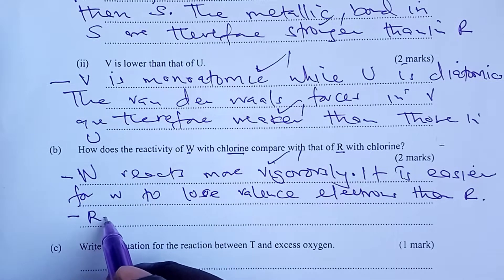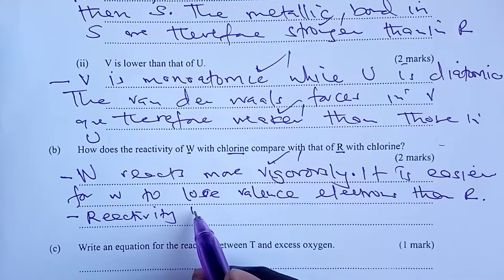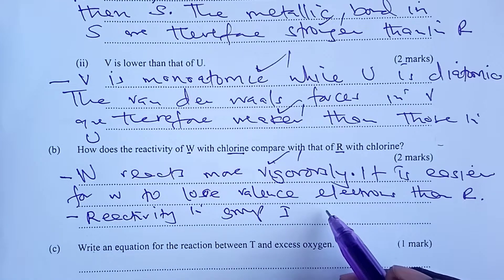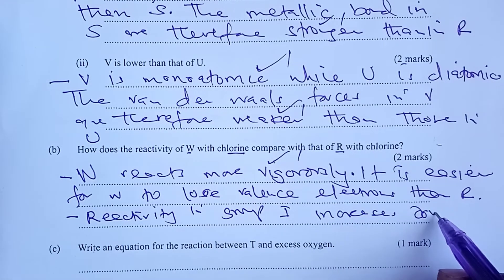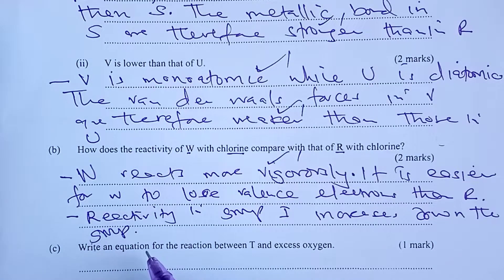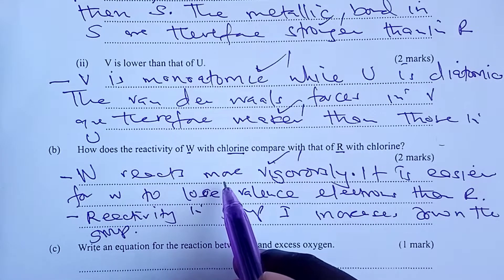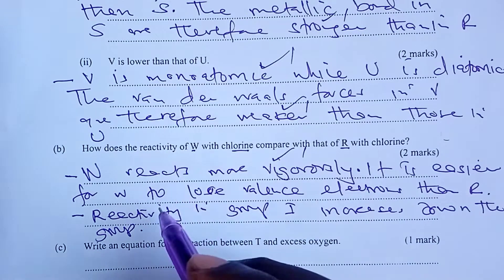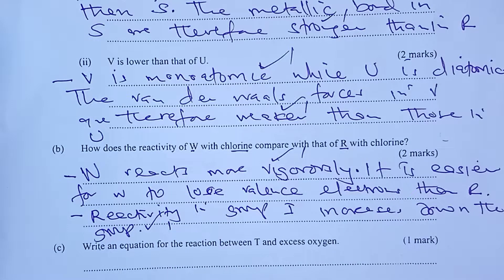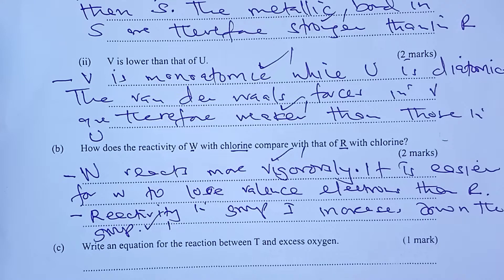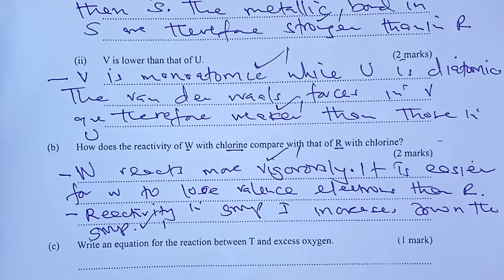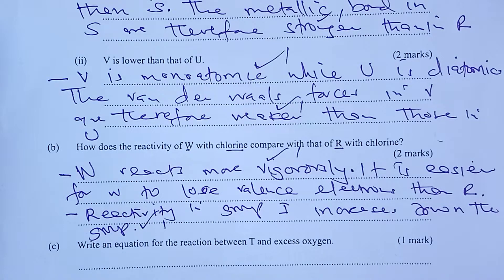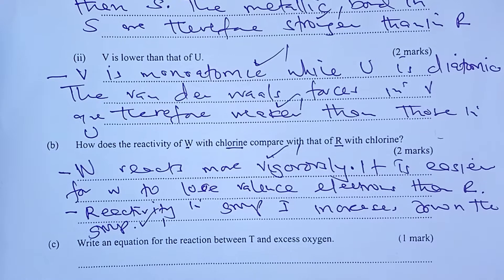There are quite a number of explanations that were available here. The first one is it is easier for W to lose valence electrons than R. You could also say that W is more electropositive than R. But what I liked most was our students also had the option of just telling us that reactivity in group 1 increases down the group. This one was also a reason. Mentioning R reacts more vigorously, one mark, and then any of those three explanations which I have talked about, another one mark.